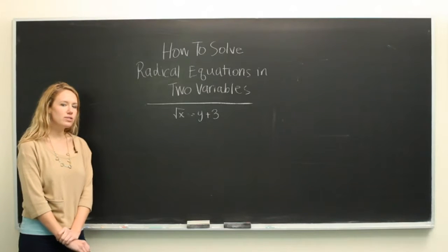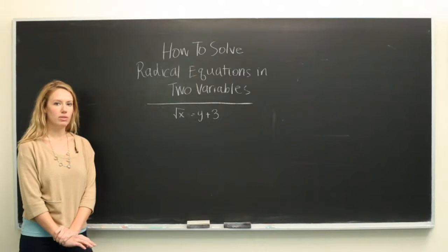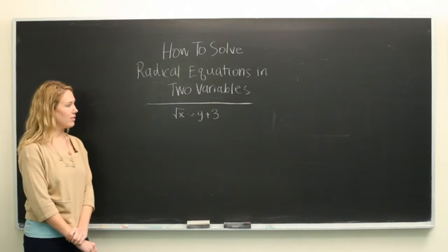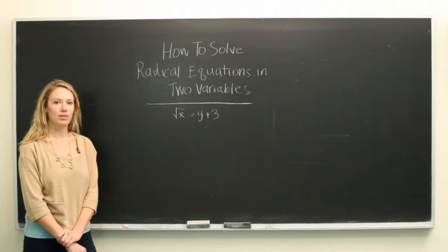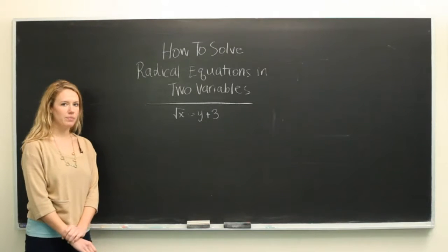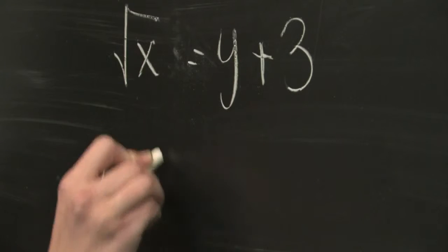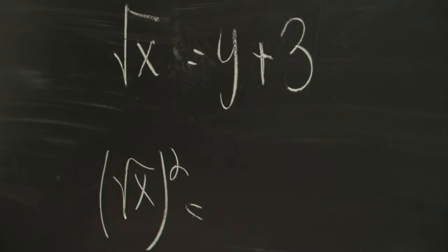The first step in solving this equation is to get rid of the radical. Since we have the square root, we need to square the left side. But what we do to one side, we have to do to the other.